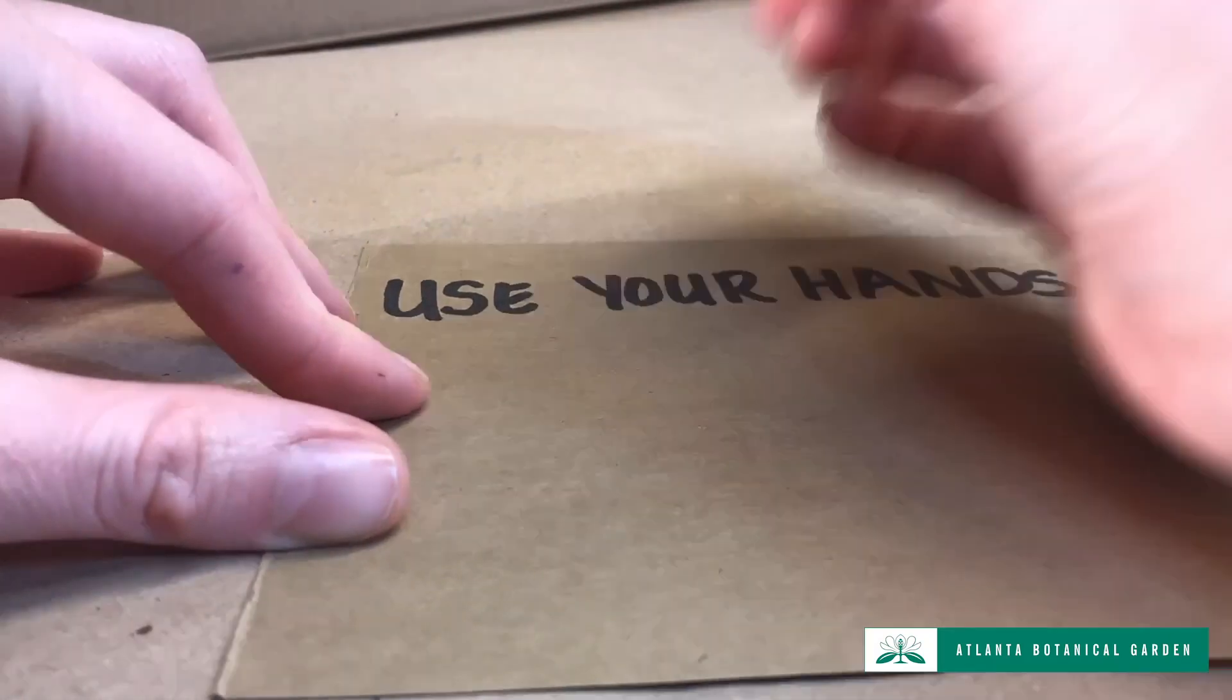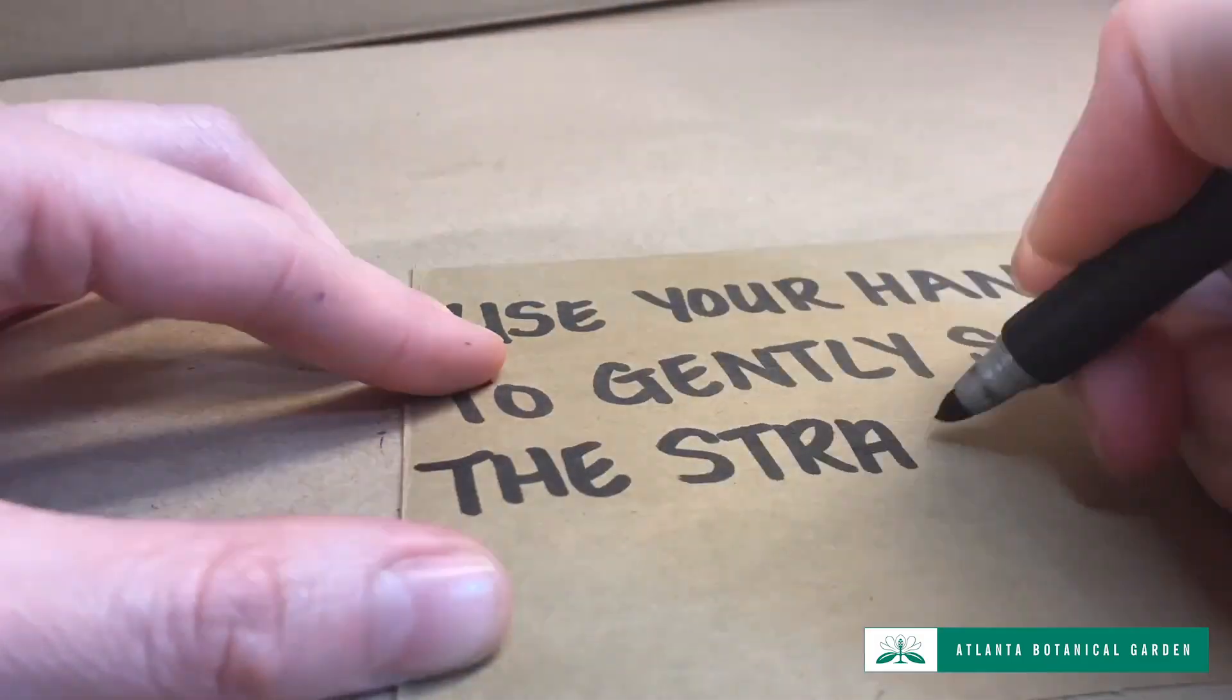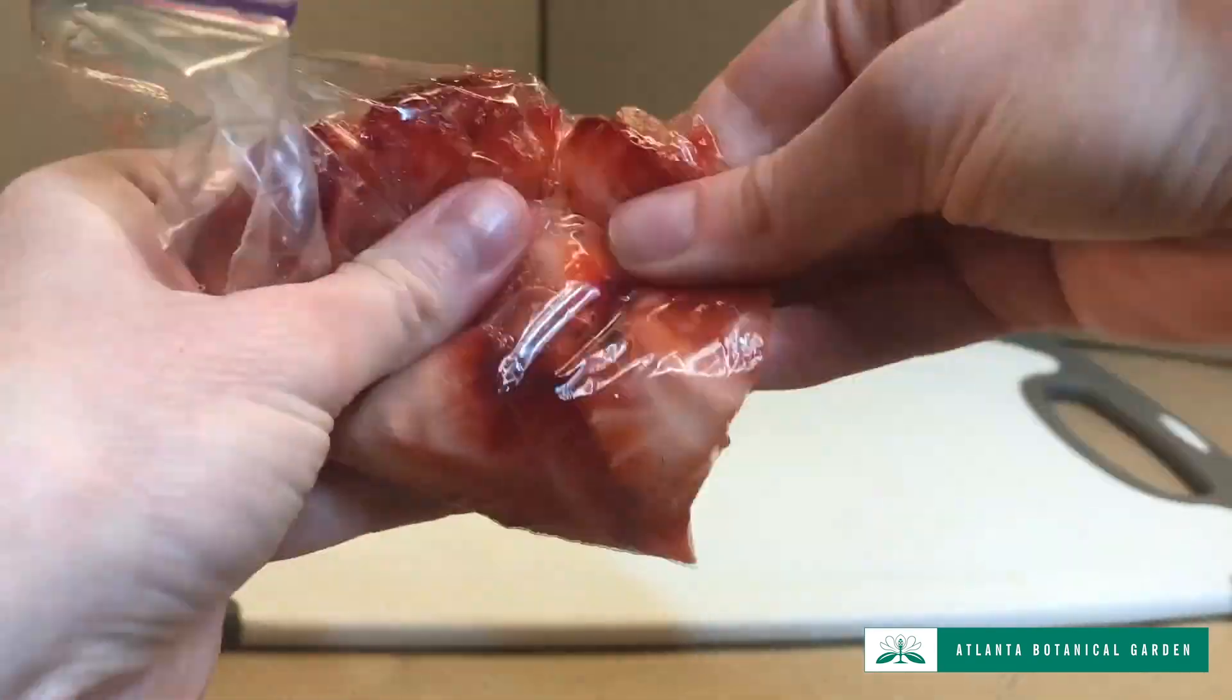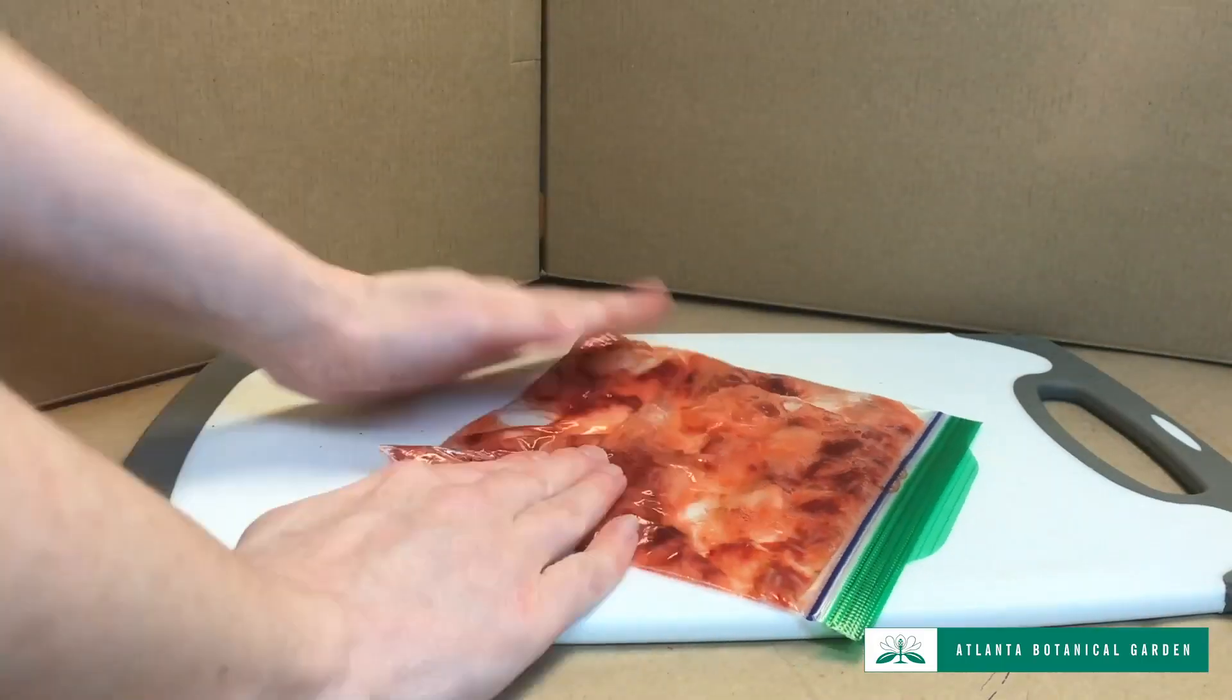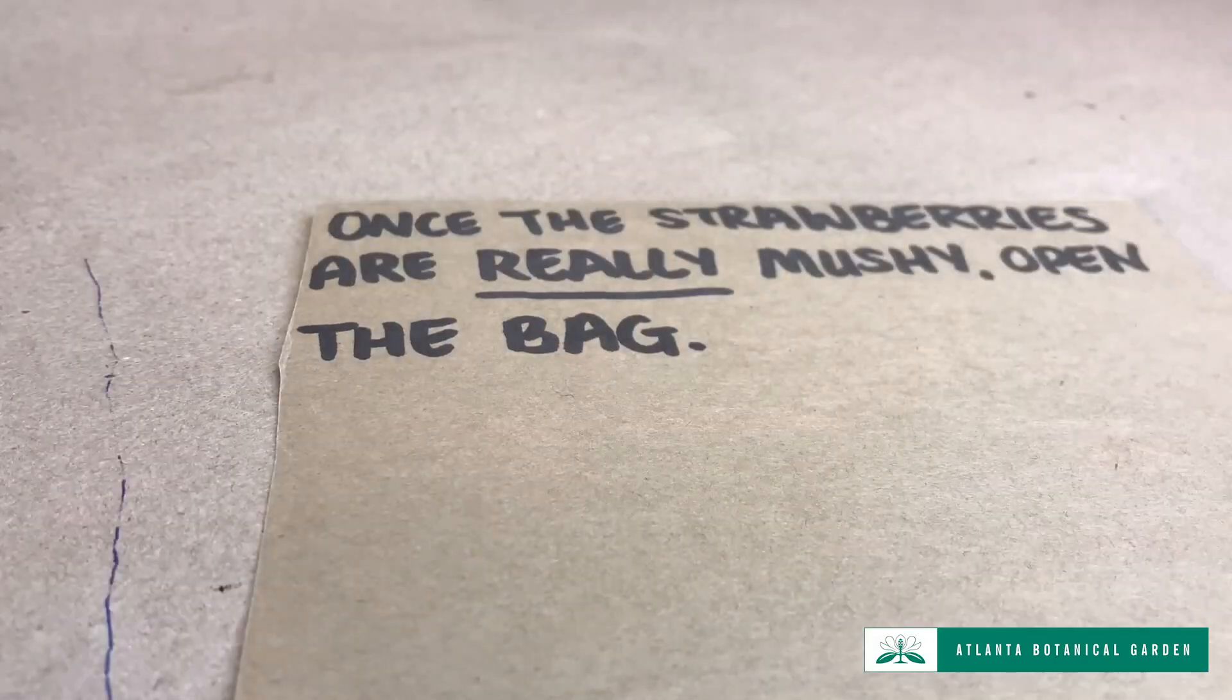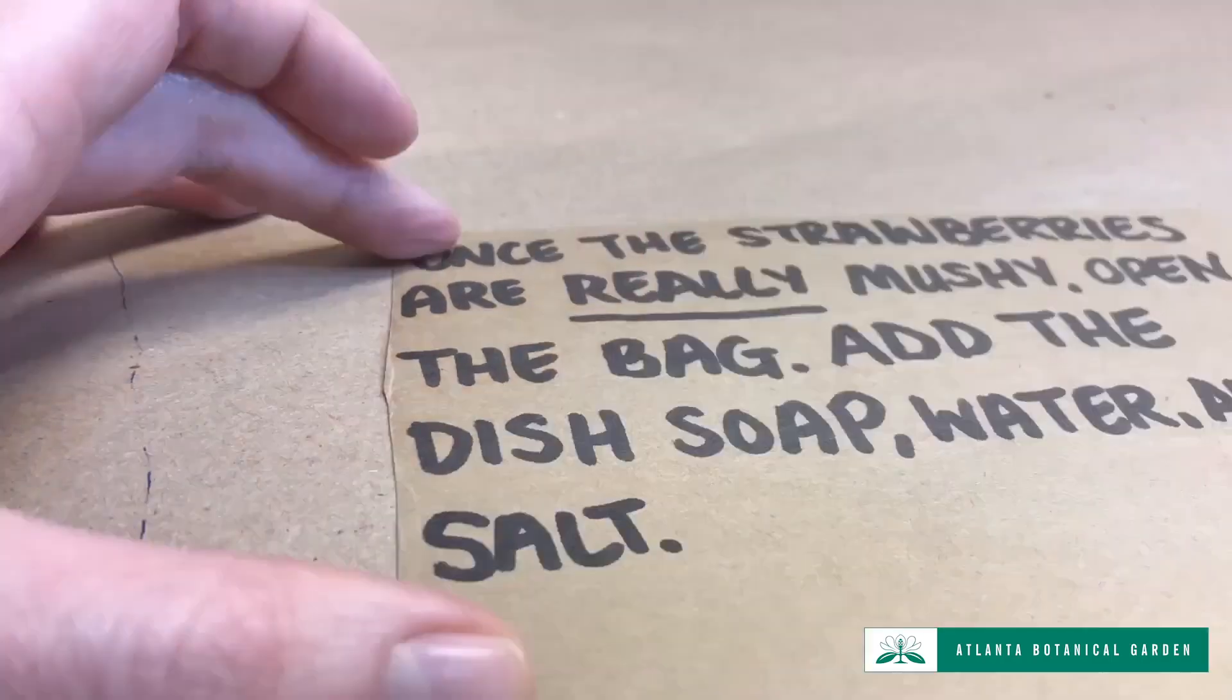Use your hands to gently squish the strawberries inside the bag. Be careful to not poke a hole in the bag while you're squishing. Once the strawberries are really mushy, open the bag, add the dish soap, water, and salt. Close the bag again.